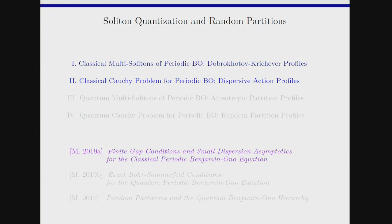Now I'll tell you about the problem of addressing this equation with arbitrary initial data. The results I'll present are from my paper on finding gap conditions and small dispersion asymptotics for this problem. The main goal in this next part — just like I wrote down these periodic multi-solitons and encoded the conserved quantities through a profile — is to do the same for an arbitrary initial condition.